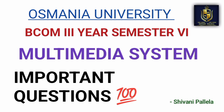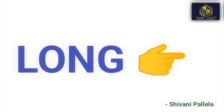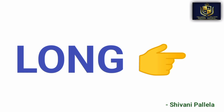Coming to the question paper pattern: it is a 50 marks paper. In Part A, questions 1 to 8 will come and you need to attempt any 5, each carrying 2 marks — write 5 to 6 lines for each. Part B consists of 5 questions each carrying 8 marks, all must be attempted, with internal choice. The 9th question comes from Unit 1, the 10th from Unit 2, and so on. Total time is 2 hours.